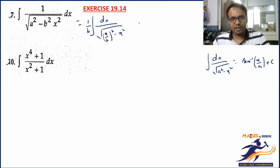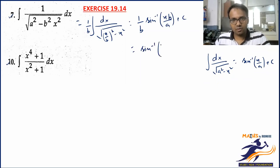In integration, neither integrate nor differentiate a constant, keep it outside. The value is 1/b sin⁻¹(x/b). The constant 1/b, times sin⁻¹(bx/a) plus c. That would be the final answer of question number 7: (1/b)sin⁻¹(bx/a) + c. I hope it is clear.